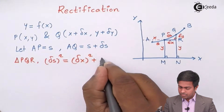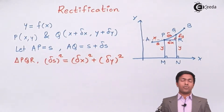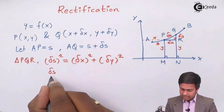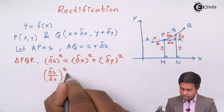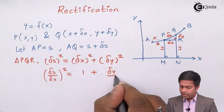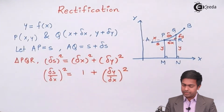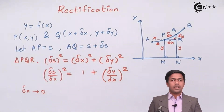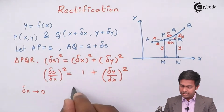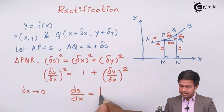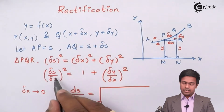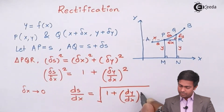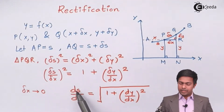By the Pythagorean theorem, Δs² = Δx² + Δy². Dividing both sides by Δx², we get (Δs/Δx)² = 1 + (Δy/Δx)². Taking the limit as Δx → 0 and taking the square root on both sides, we get ds/dx = √(1 + (dy/dx)²), replacing Δ with d.